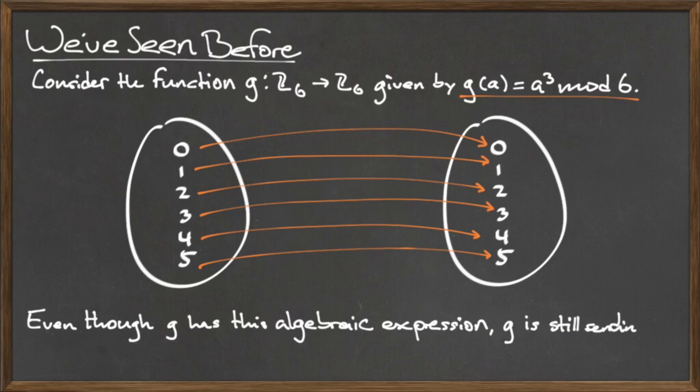That is, the image of 0 under g is 0, the image of 1 under g is 1, and so on. Each preimage is its own image under g. This is the main idea behind an identity function.